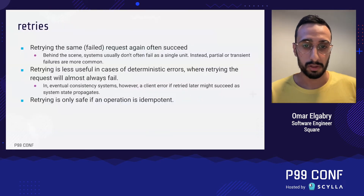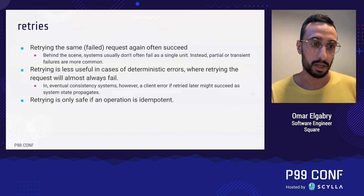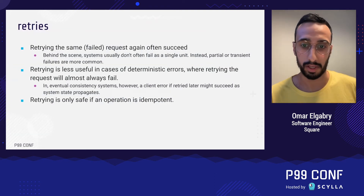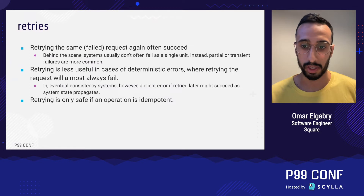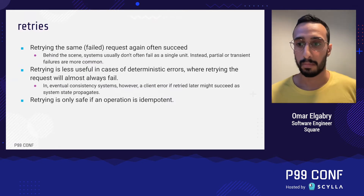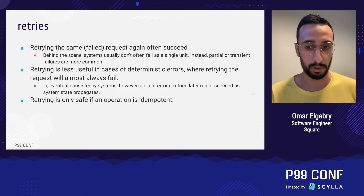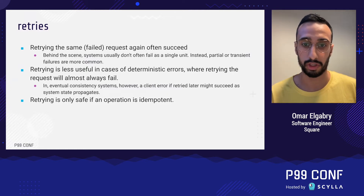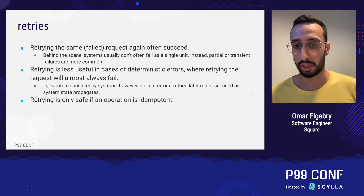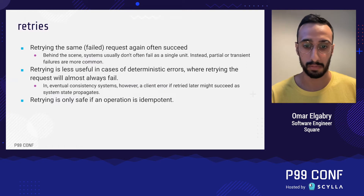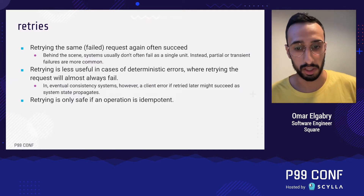Retries. Retrying the same request as a result of a failure, timeout, or any non-deterministic error often succeeds, because fault-tolerant systems usually consist of a fleet of nodes and do not fail as a single unit. Partial or transient failures are more common, so retrying allows clients to survive these random, partial, and transient failures. Retries are less useful in case of deterministic errors — trying to withdraw money from an account with insufficient funds is a good example. In eventual consistency systems, however, a client error if retried later might succeed as the system state propagates.